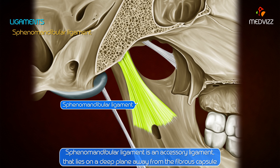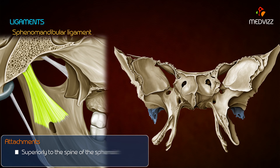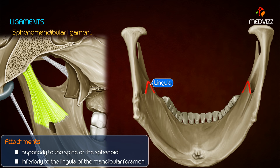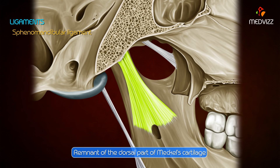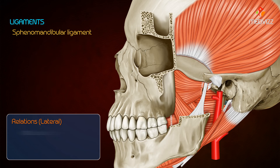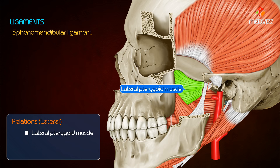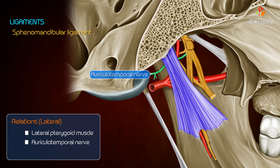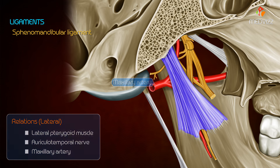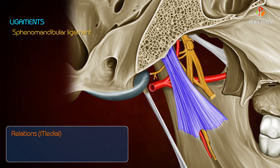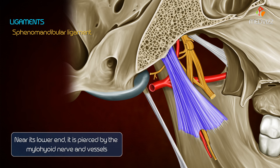The spinomandibular ligament is an accessory ligament that lies on the deep plane away from the fibrous capsule. It is attached superiorly to the spine of the sphenoid and inferiorly to the lingula of the mandibular foramen. It is a remnant of the dorsal part of Meckel's cartilage. This ligament is related laterally to the lateral pterygoid muscle, the auriculotemporal nerve, and the maxillary artery.